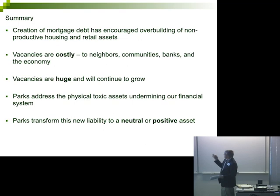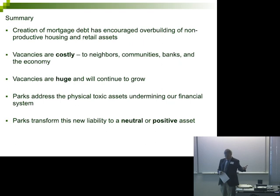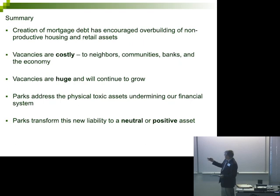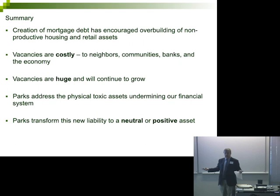Creation of mortgage debt has encouraged overbuilding of nonproductive housing and retail assets, which is really costly to our country. When I started in the railroad industry in 1981-1982, there was a big incentive to build rail cars because we thought this country was short of box cars. All of a sudden, the recession hit — and it was very costly to have excess assets. It's not an asset when something is in excess supply and is slowing down the operations of a business enterprise or an entire economy. Vacancies are costly. Parks address the physical toxic assets undermining our financial system. Everything being done on Wall Street and in Washington today is addressing the paper assets — there is no program to address the physical assets on a major scale. This is what this program can be.